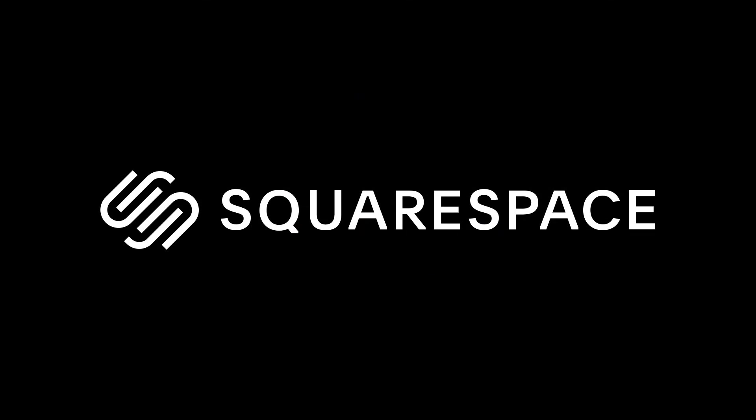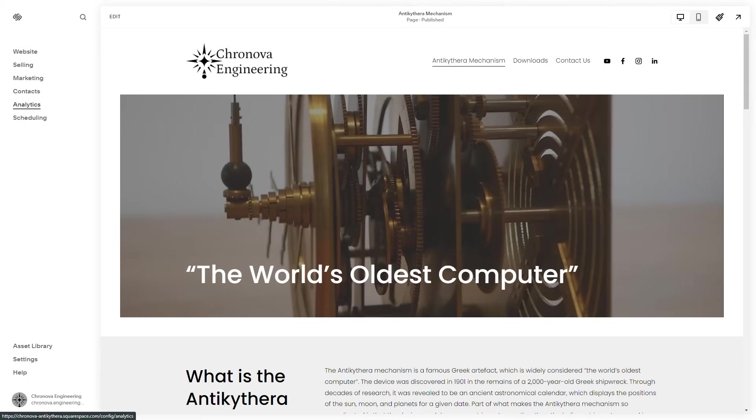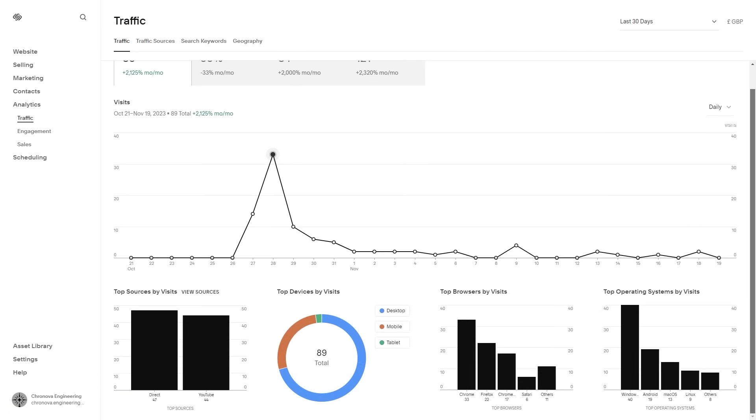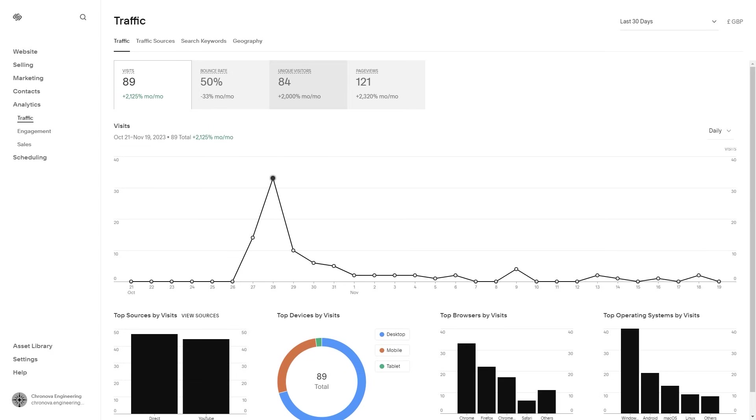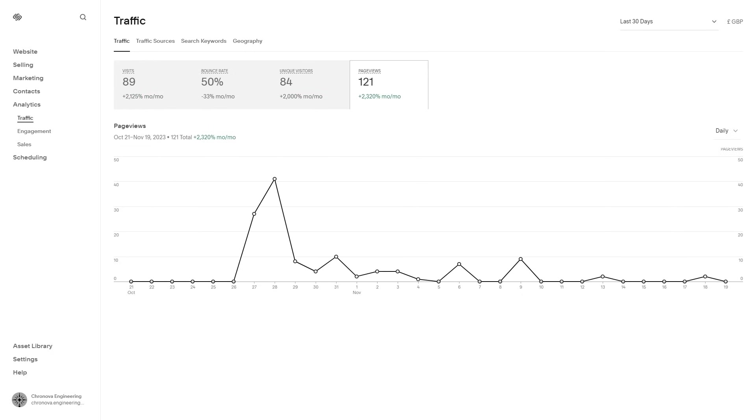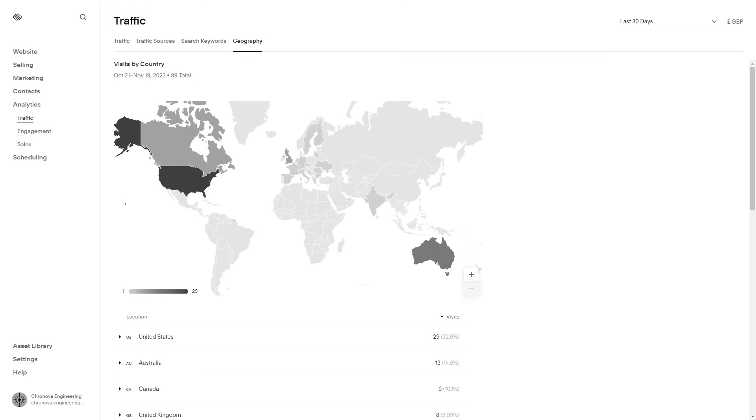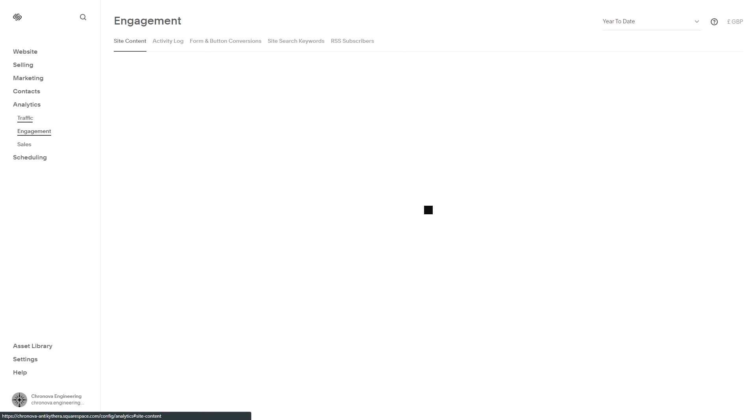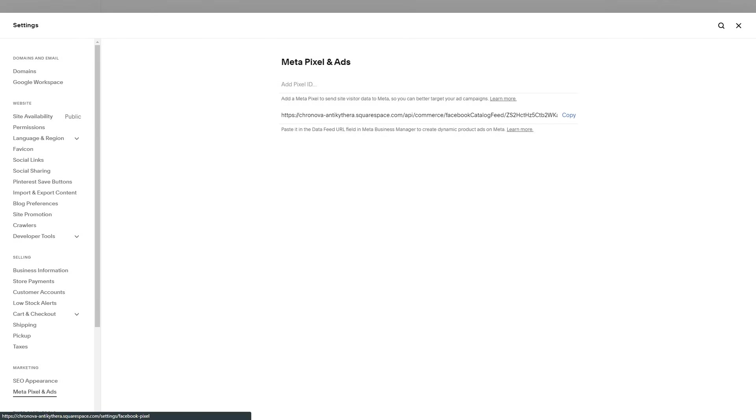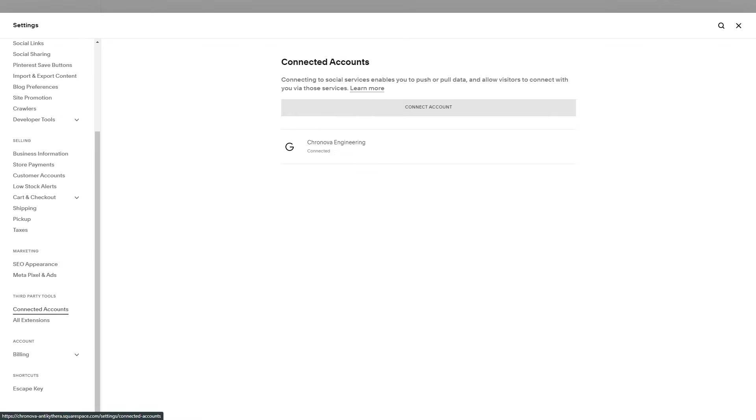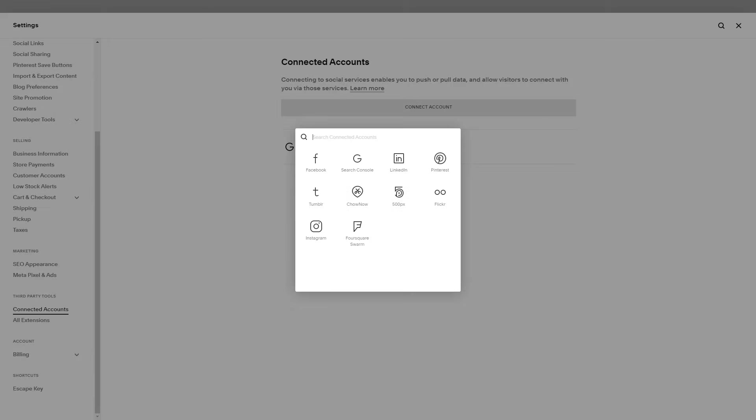Thanks again to Squarespace for sponsoring this video. In our last video, we showed you some of the core Squarespace design tools, but this time, let's take a look behind the scenes. Squarespace has a wide range of built-in analytics tools that really help you to dig into how visitors are interacting with your website. Essential stats like visitor sources are easy to find, but it's also fascinating to see where your audience is based, and which buttons receive the most clicks. If you fancy taking it a step further, you can even connect your website to all sorts of third-party tools, like Metapixels and Google Analytics.